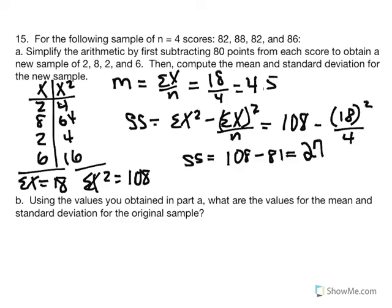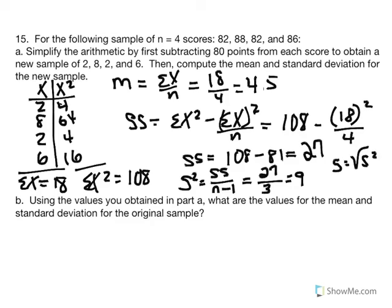Next, we need to calculate the variance of the sample. Variance is equal to SS over n minus 1, or degrees of freedom. SS is equal to 27, and n minus 1 is equal to 3, so my variance is equal to 9. The variance represents the average of squared deviations. Finally, to calculate my standard deviation, standard deviation is equal to the square root of my variance. The square root of 9 gives a standard deviation equal to 3.